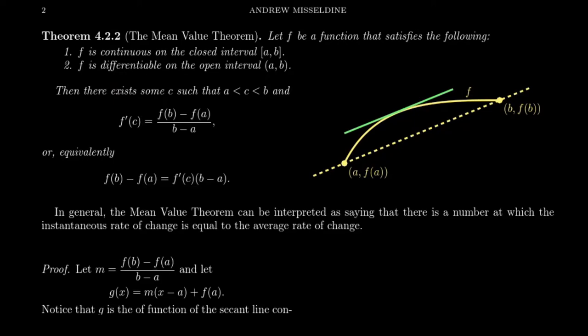Rolle's theorem actually has three assumptions. The first two are the same as here. The third condition for Rolle's theorem is that f of a equals f of b. This is the main difference between the mean value theorem and Rolle's theorem: in the mean value theorem, we don't require that f of a equal f of b. We'll see that Rolle's theorem is actually a special case of the mean value theorem when f of a equals f of b.